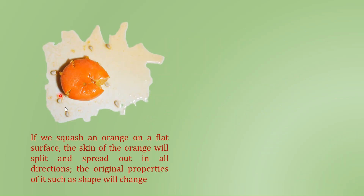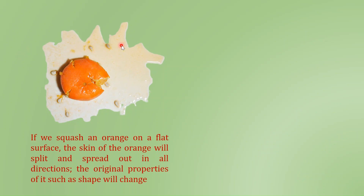Let us start with a very basic example. Suppose if we want to project the features of this orange on a paper. In order to do so, if we squeeze this orange on a flat surface, the skin of it will get split and spread in all the directions. So the original property like the shape of it is getting changed when we are trying to project the orange on a paper.